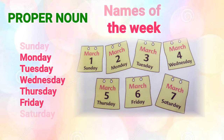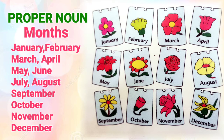Similarly, the months — January, February, March, April, May, June, July, August, September, October, November, and December — are all proper nouns.